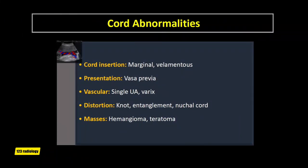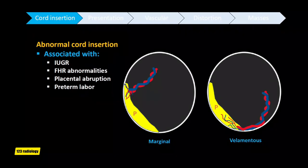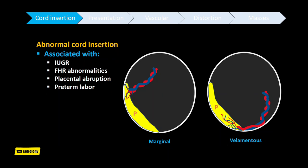A number of abnormalities can affect the umbilical cord, related to its placental insertion, presentation, in utero distortions such as knots and nuchal cord, number of vessels present, and presence of masses. These abnormalities can influence the perinatal outcome and may be associated with other fetal anomalies and aneuploidy. Let's discuss abnormal cord insertion.